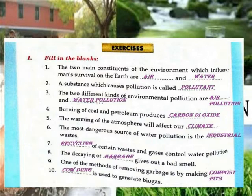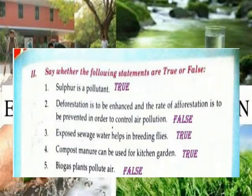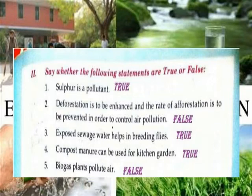True or False? Sulfur is a pollutant — True. Deforestation is to be discouraged and the rate of deforestation is to be prevented in order to control air pollution — False. Water pollution causes breathing problems — True. Compost manure can be used for a kitchen garden — True. Biogas plants produce air — False.